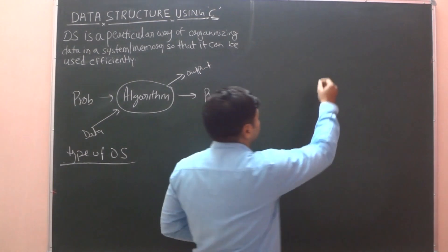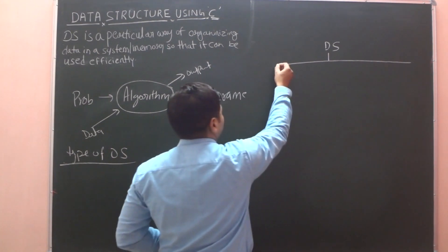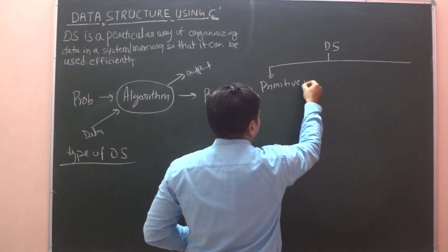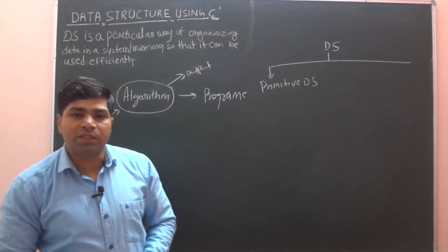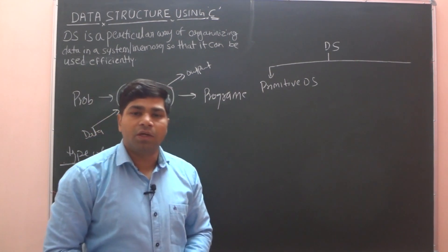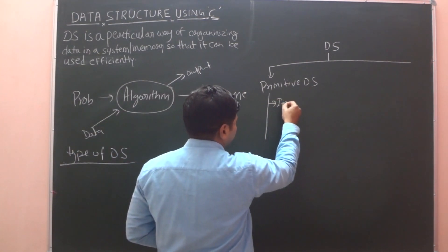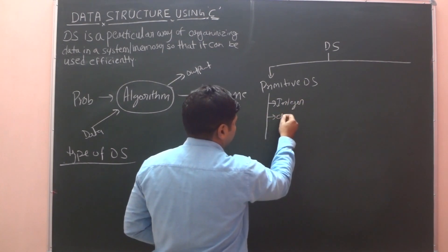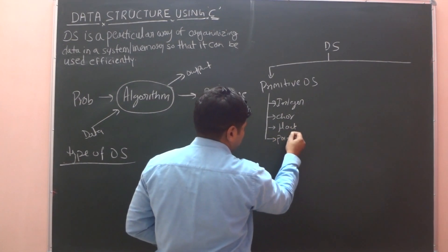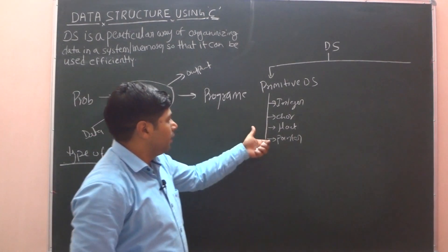Next is types of data structure. Data structure is of two types. First is primitive data structure. What is primitive data structure? System and compiler defined data types are called primitive data structures. Which ones are primitive data structures? Integer, character, float, pointer, boolean, etc. This is called primitive data structures — those which are defined in the system.